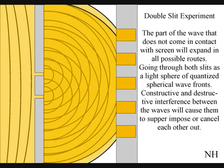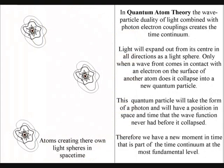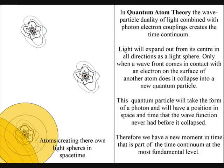Understanding time is the key to understanding the two-slit experiment. In this theory, the wave-particle duality of light combined with photon-electron couplings creates a time continuum. Light will expand out from its center in all directions as a light sphere. Only when a wave front comes in contact with an electron on the surface of another atom does it collapse into a new quantum particle.